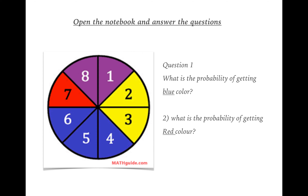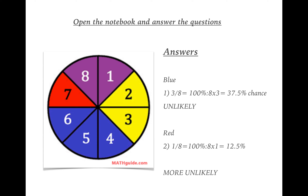For blue, there are three sections of blue and eight sections in total, so three over eight. One hundred divided by eight multiplied by three gives 37.5 percent chance — quite unlikely, less than half. For red, there's only one red section out of eight, so one over eight. One hundred divided by eight gives 12.5 percent chance — more unlikely. Pause if you're not sure and take a longer look.